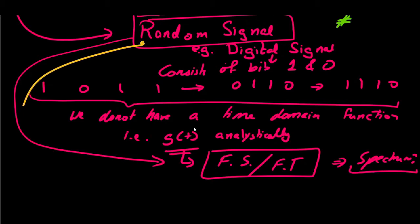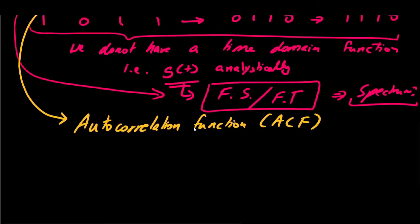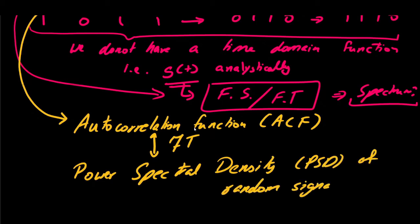But fortunately for the random signal, we can find its autocorrelation function, that is ACF. Correlation as the name suggests is simply the similarity of a given signal, that is g of t with a delayed or advanced version of itself. And then we take the Fourier transform of this autocorrelation function which yields power spectral density, that is the PSD of a random signal.